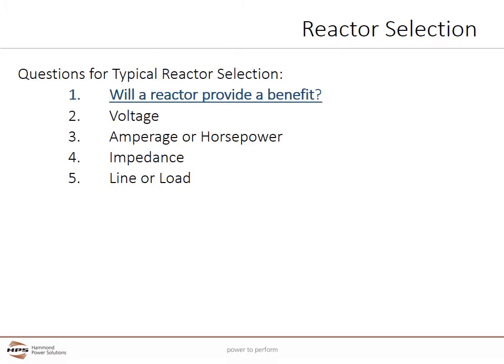There are five main items needed for line reactor selection. Number one, will a line reactor provide a benefit? This is different from asking does a VFD need a reactor. We also need to determine the voltage of the VFD and motor, the amperage or horsepower required, the impedance which is typically measured as a percentage, and whether this is a line or input side reactor or a load or motor side reactor.